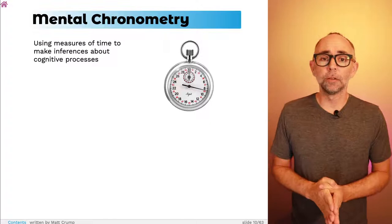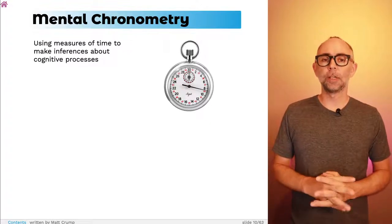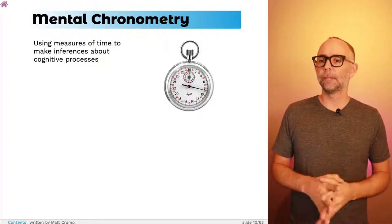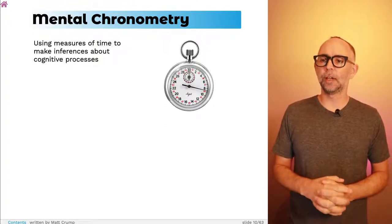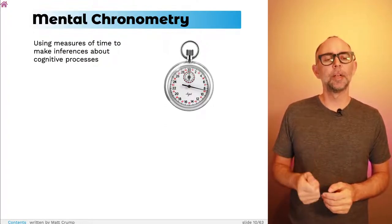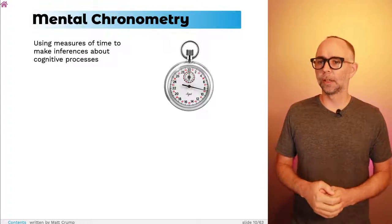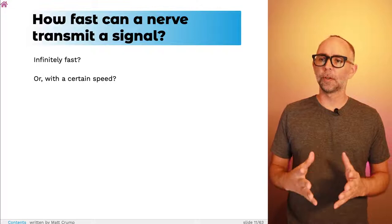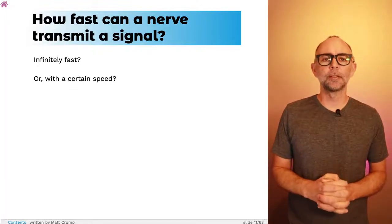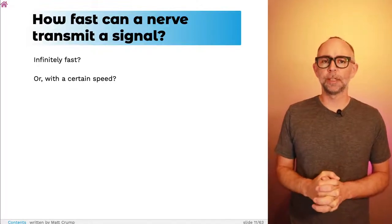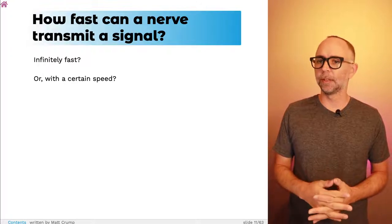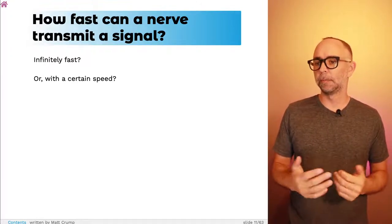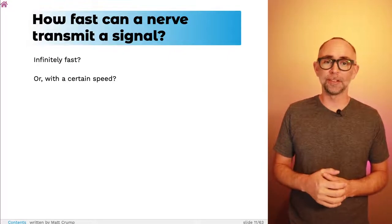We're going to be talking a lot about mental chronometry in this section. All that means is using measures of time to make inferences about cognitive processes. For example, here's a question: How fast can a nerve transmit a signal? This is something people were wondering about in the 1800s.